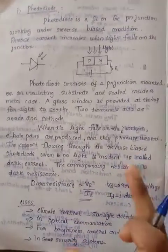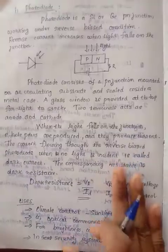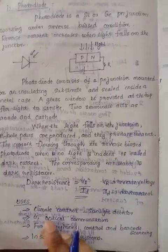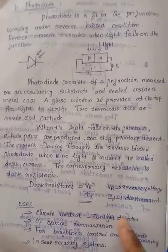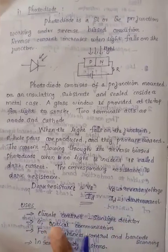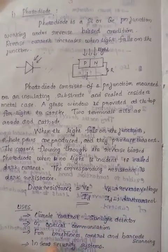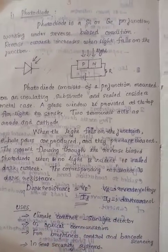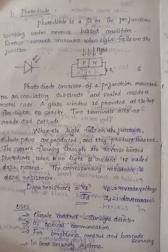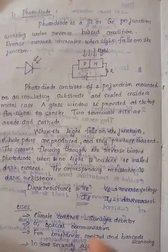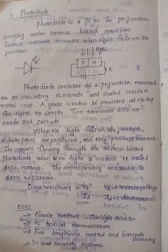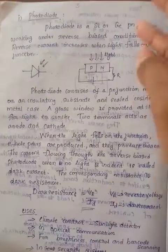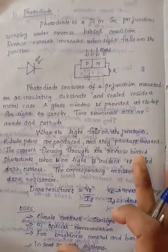The photo diode is used for climate controlling, sunlight detection, optical communication, brightness control, barcode scanning, and security systems.